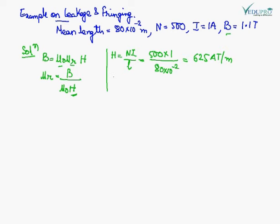Now H is given by NI/L where all the parameters are given. 500 is the N, I is 1 ampere, and L is 80 cm. So putting the values, we have calculated H. Now we will put the value of H in this equation B = μ₀μᵣH.